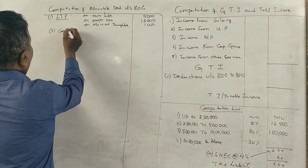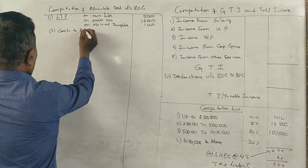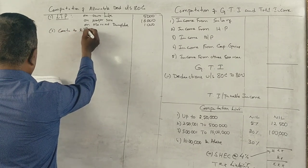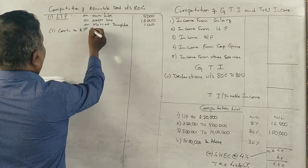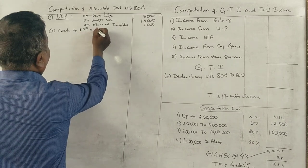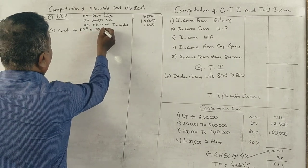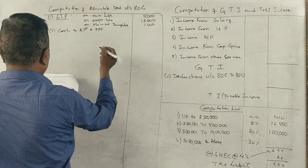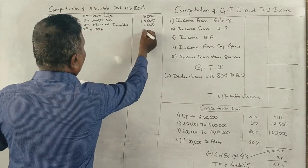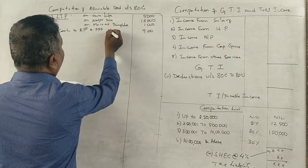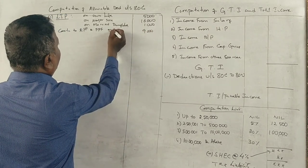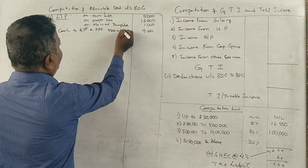Contribution to RPF and PPF — you have to add 9,000. That is 5,000 plus 4,000.